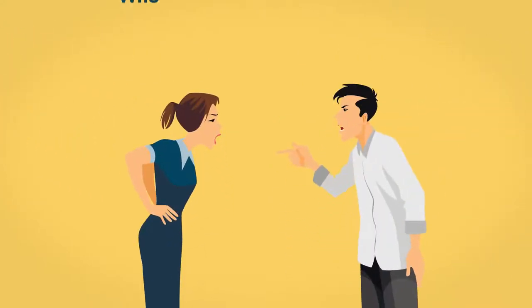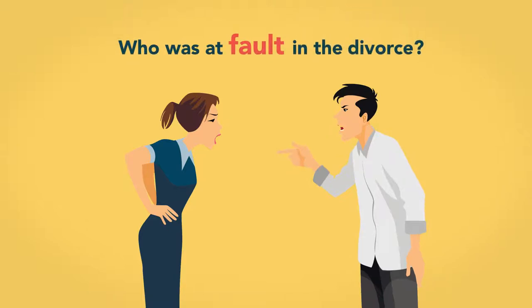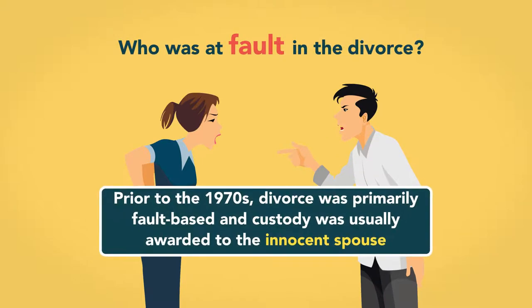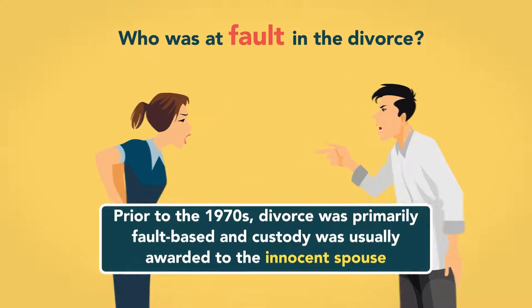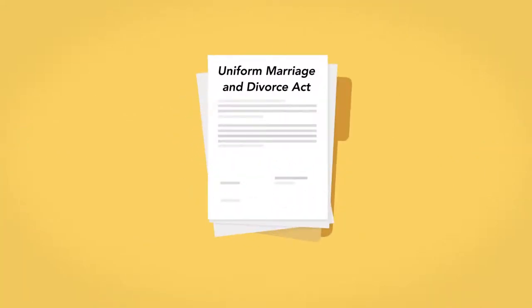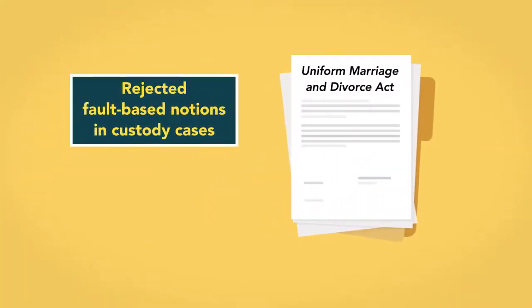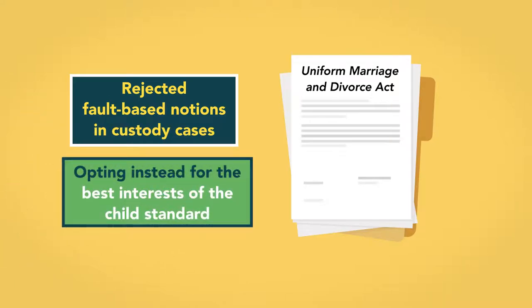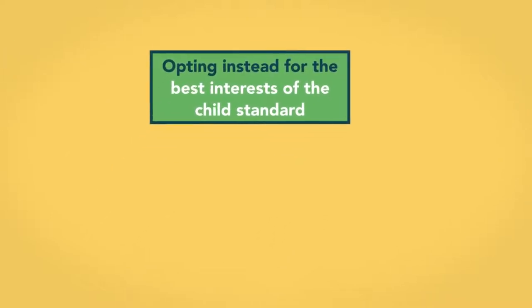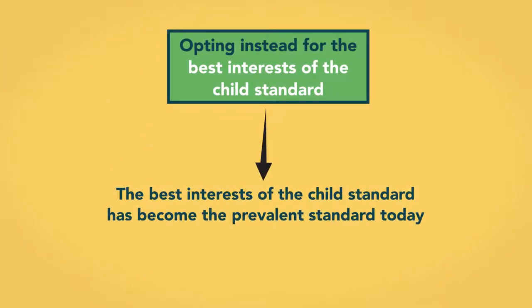Another formerly influential factor in custody decision-making was who was at fault in the divorce. Prior to the 1970s, divorce was primarily fault-based and custody was usually awarded to the innocent spouse. In 1970, the Uniform Marriage and Divorce Act rejected fault-based notions in custody cases, opting instead for the best interests of the child standard, which has become the prevalent standard today.